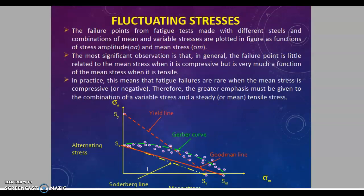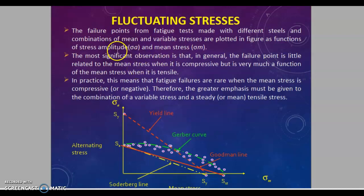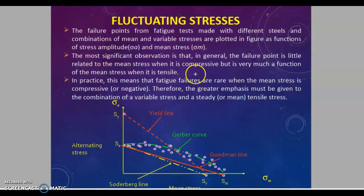Now we will see fluctuating stresses. The failure points from tests made with different combinations of mean and variable stresses are plotted in a figure as functions of stress amplitude sigma_A and mean stress sigma_m. Mean stress is the average of sigma_max and sigma_min, and stress amplitude is the difference between maximum and minimum stress divided by 2. The most significant observation is that failure is little related to mean stress when compressive, but is very much a function of mean stress when tensile.